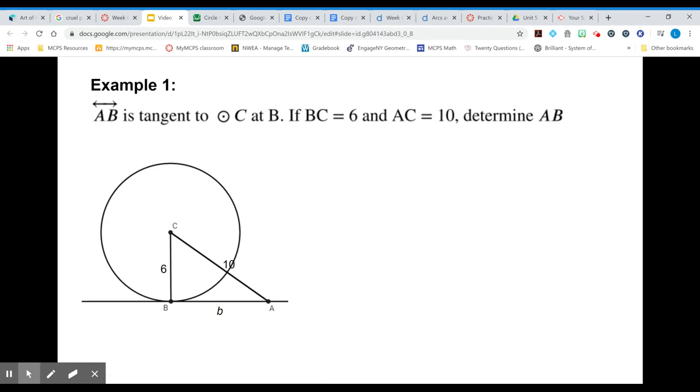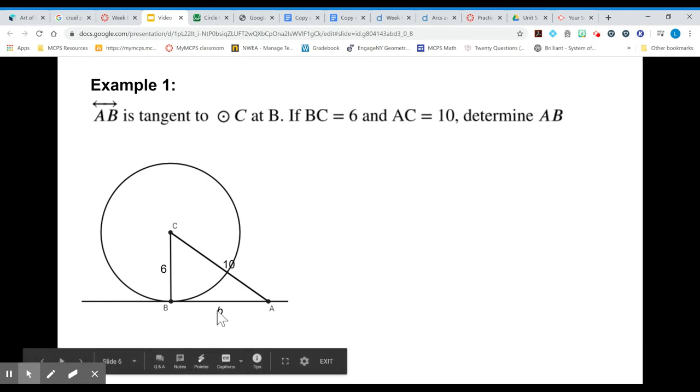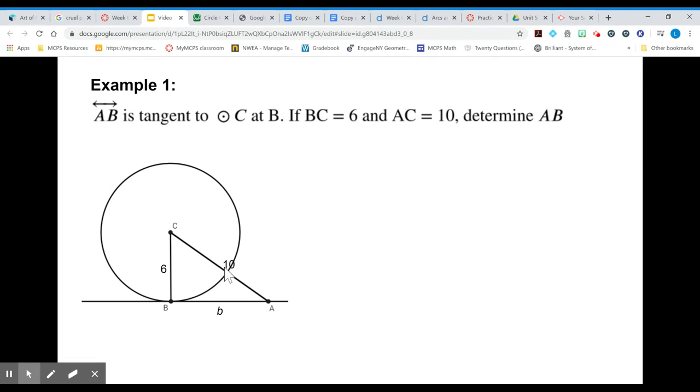So let's do two practice problems. In this case AB is tangent to circle C at B. We're given a side length and a hypotenuse and we know this is a right angle. So here comes Pythag.